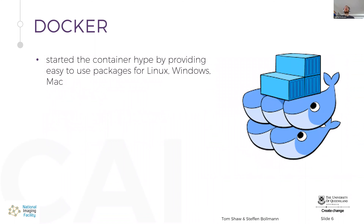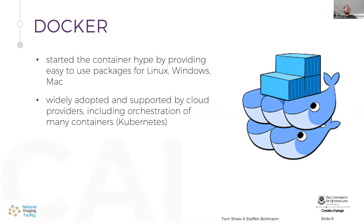The first big container technology was Docker. Docker started the container hype and made tools already available in Linux really nice and user-friendly, providing packages for Linux, Windows, and Mac. It's widely adopted because when the cloud took off, it was really useful to package software in containers and shift them quickly around different computers and data centers worldwide. When you read about Docker, you'll also encounter Kubernetes, an orchestration tool to manage all these little containers — called microservices. In science you won't deal so much with Kubernetes.